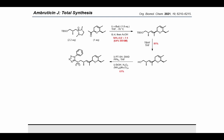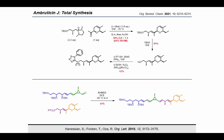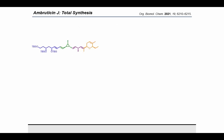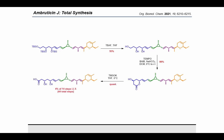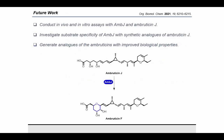Gratifyingly, the envisaged olefination provided the trans-alkene in a 61% yield using standard Julia conditions of KHMDS and 18-crown-6 at -60°C to room temperature, which completed the carbon skeleton of Ambruticin J. The synthesis was then completed by global deprotection, selective oxidation of the primary alcohol to the lactone, and finally mild hydrolysis to yield Ambruticin J in a 4% yield over 14 steps longest linear sequence and a painstaking 44 total steps.